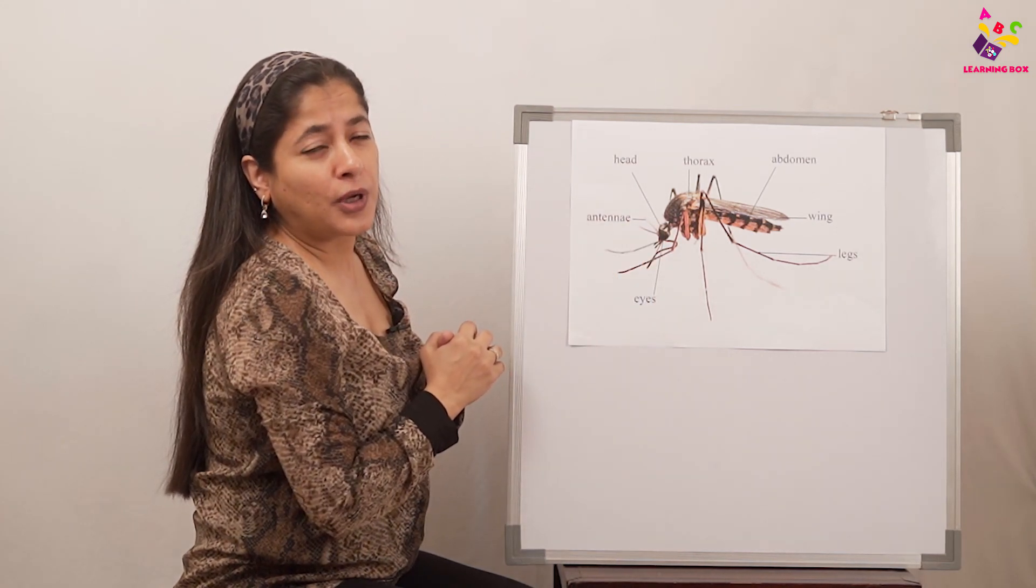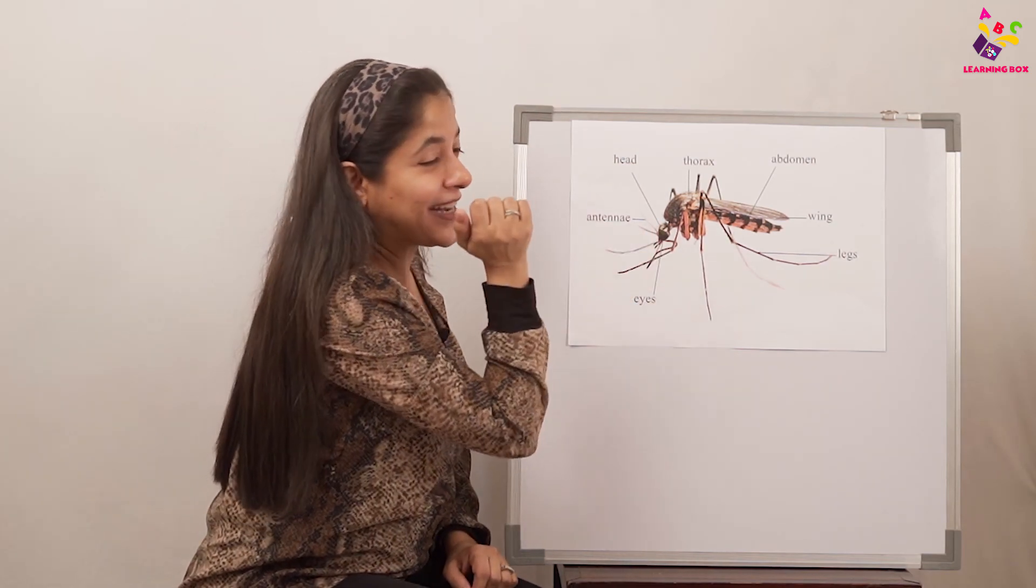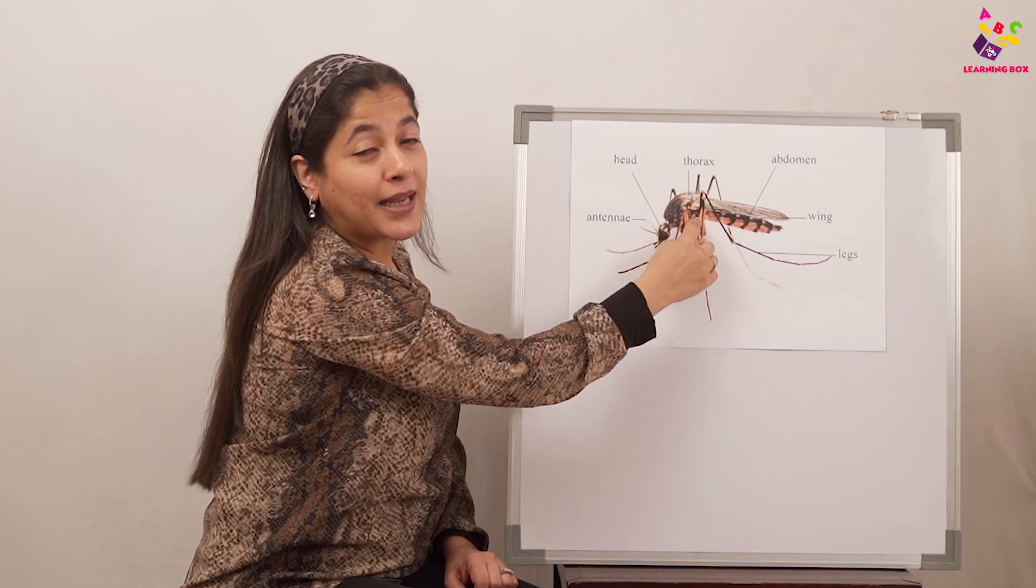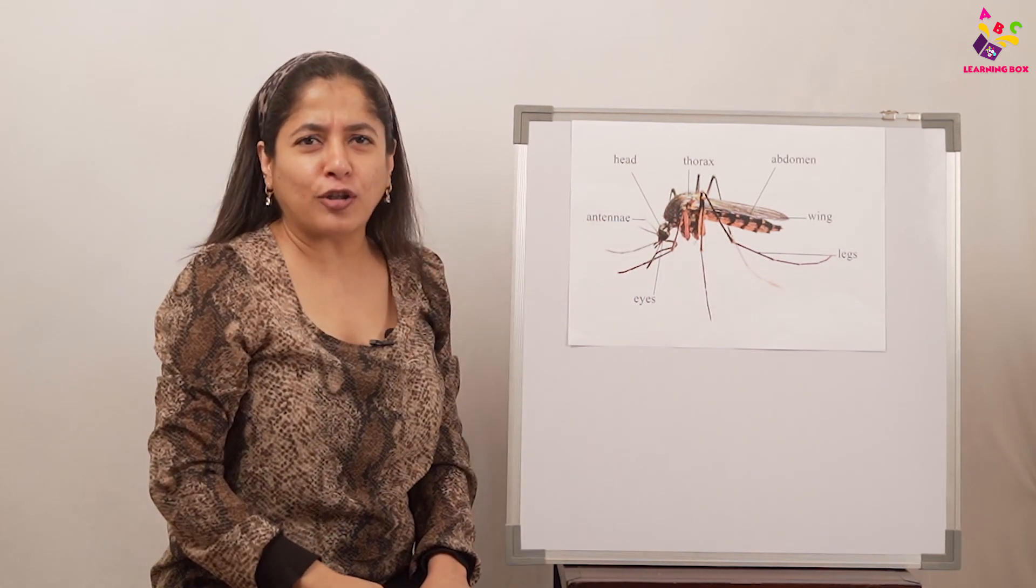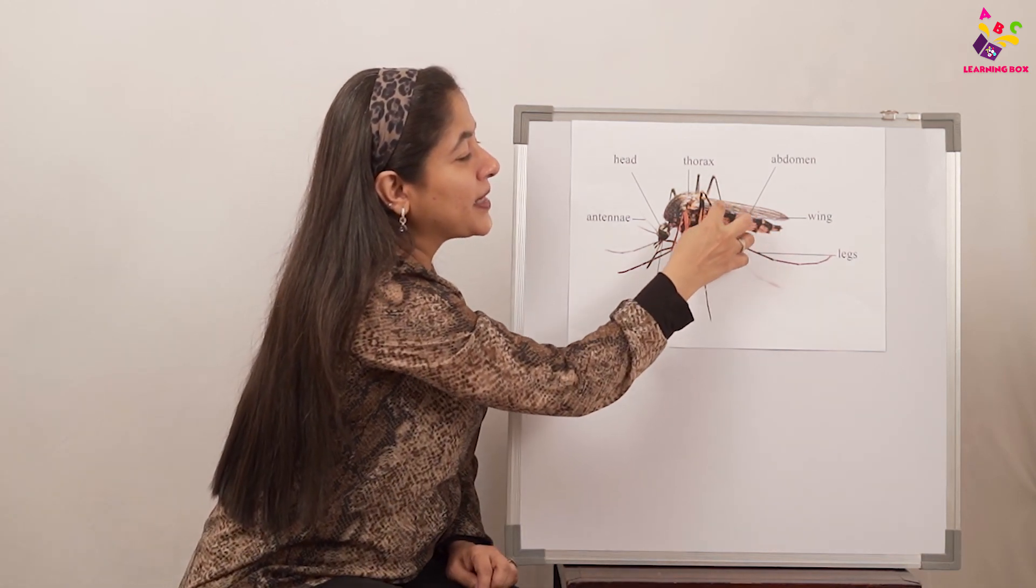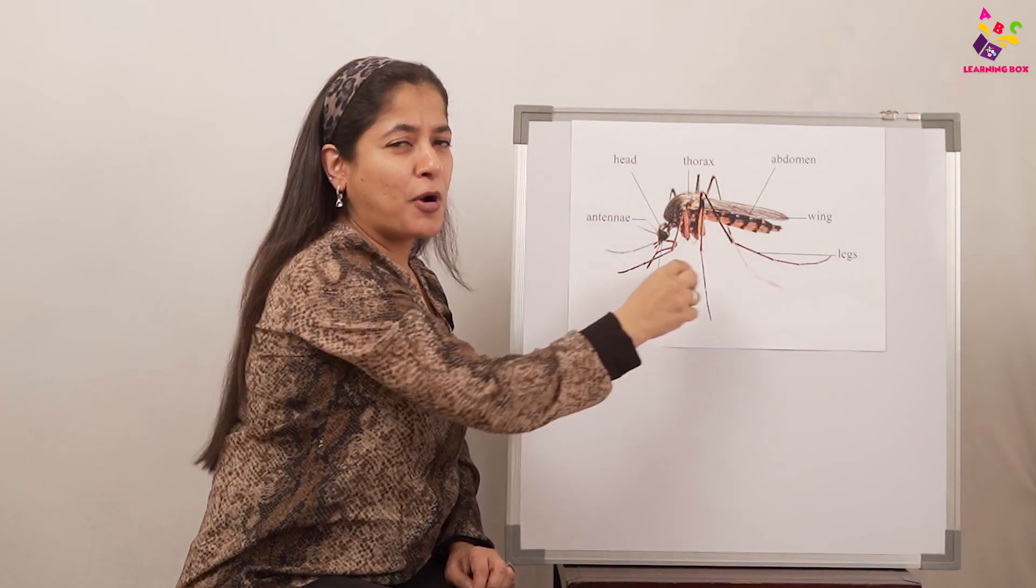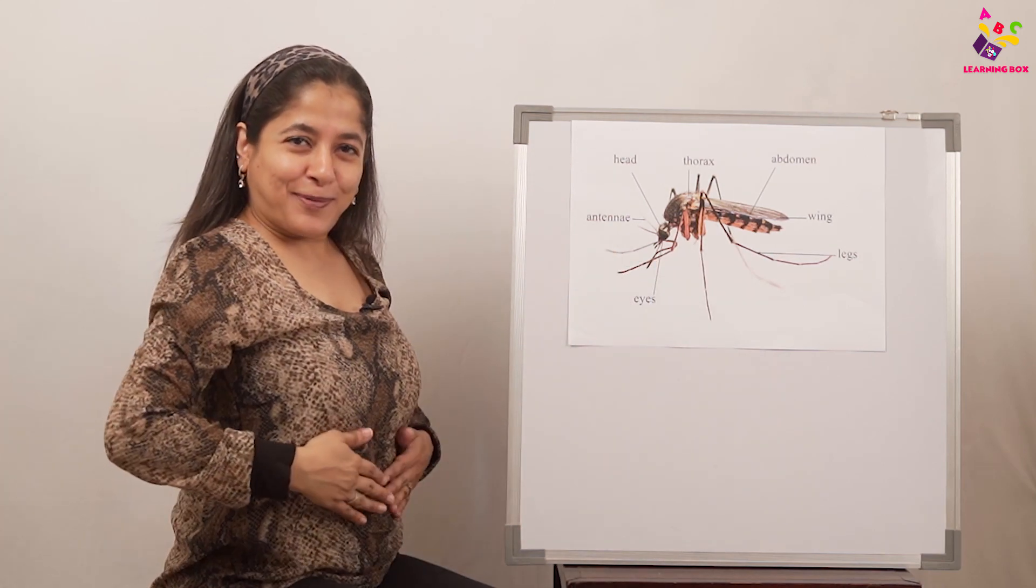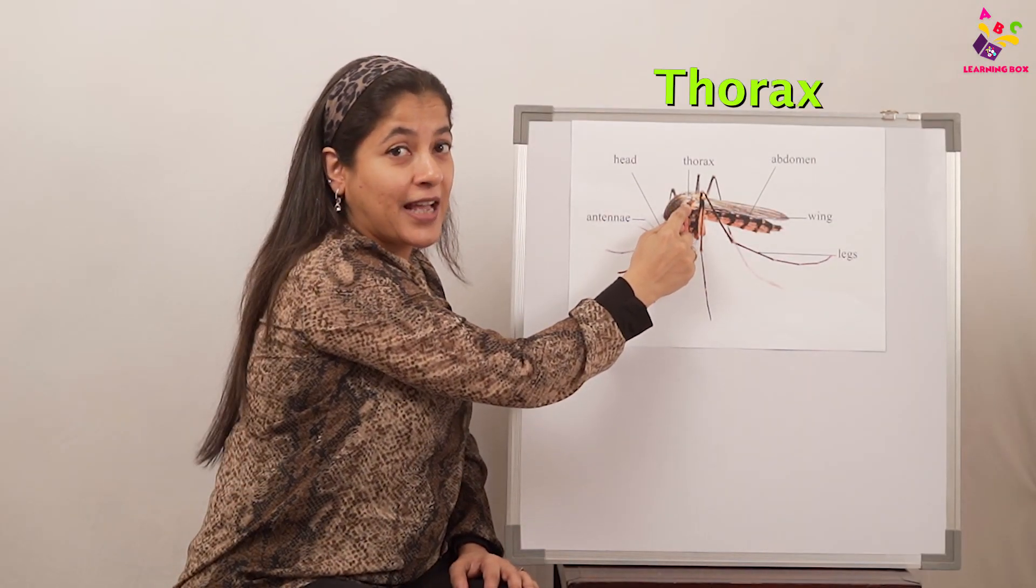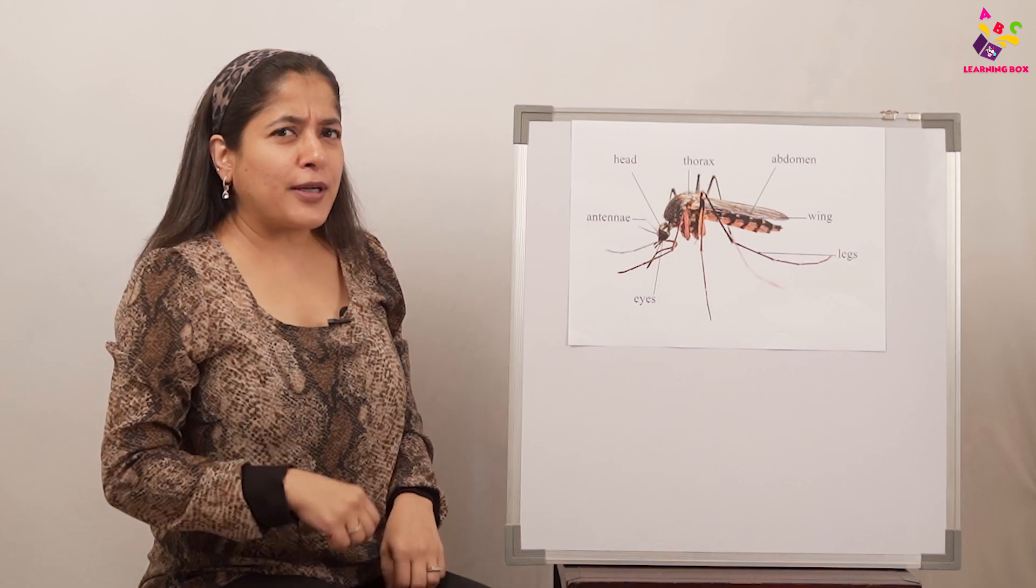Get set, let's count the body parts. This is the head of the mosquito. Come on everyone, show me your head. Very good. And then we have the thorax, the center part. Everyone show me your thorax. And at the bottom is the abdomen. Show me your abdomen. Absolutely, this is our abdomen. So the mosquito has a head, thorax, and abdomen.